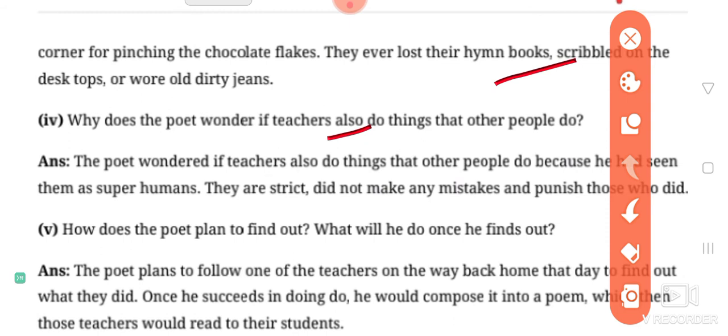How does the poet plan to find out? What will he do once he finds out? The poet plans to follow one of the teachers on the way back home that day to find out what they did. Once he succeeds in doing so, he will compose it into a poem which then those teachers would read to their students.